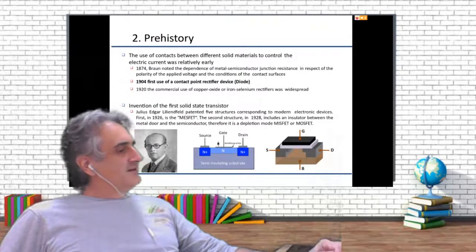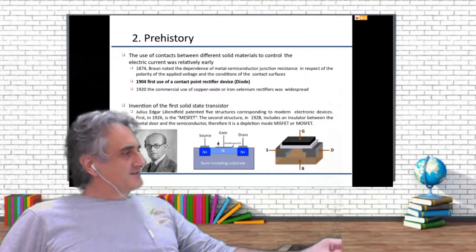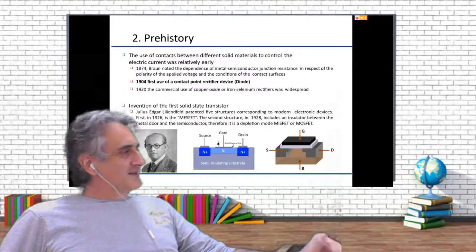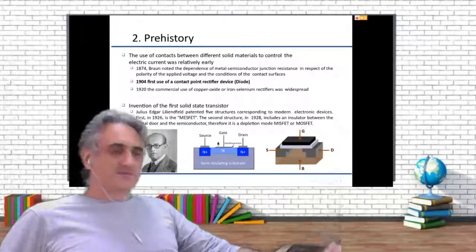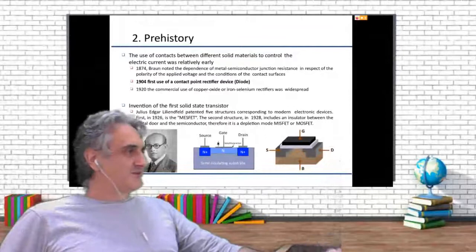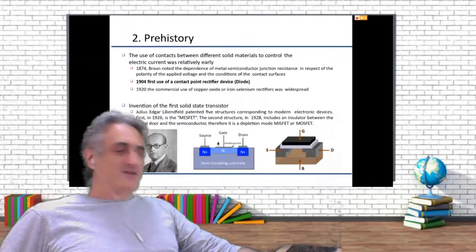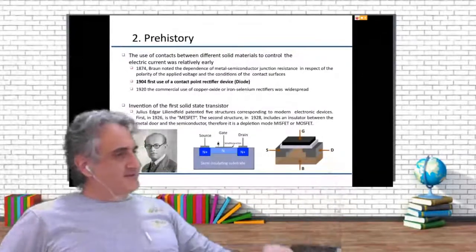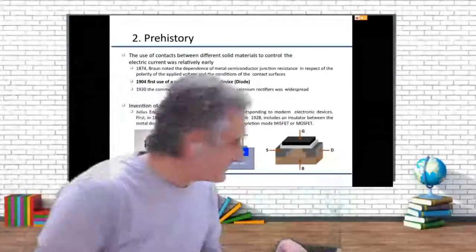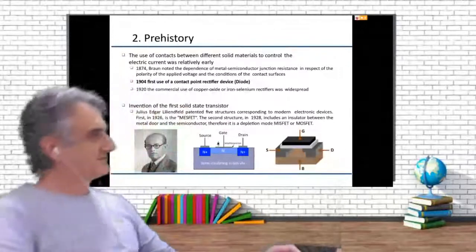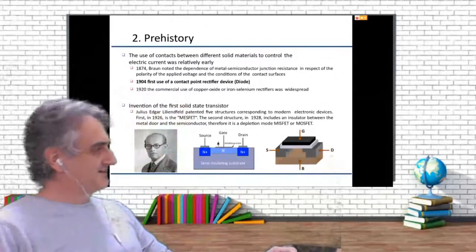In 1926, Julius Edgar Lilienfeld patented some things that were very similar to the modern devices we are using today, which are MOS devices. These are the things he patented. He was quite an interesting guy.